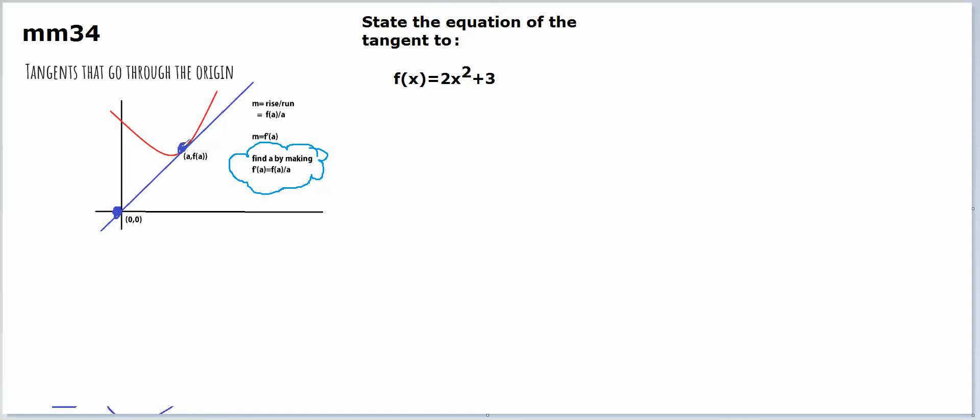The tangent at this point will be the derivative of the parabola at the point a. The gradient of the tangent will also equal the same value, but I can use rise over run, which gives me the derivative of the parabola at a will equal the rise of this gradient triangle, which is f of a divided by a.